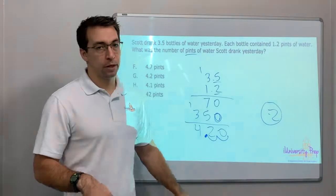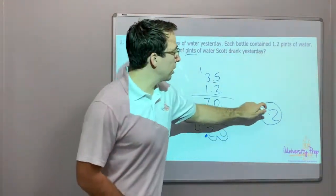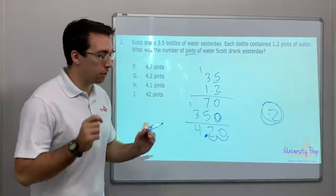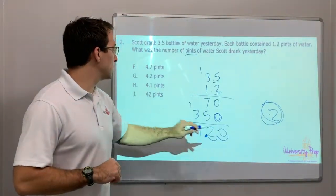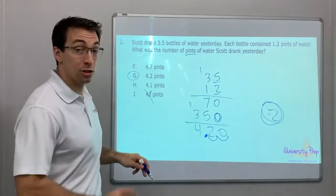We have two decimal places, so one, two: 4.2. It's so important if you count your decimals before you even start, it really helps you with your answer. There's going to be two decimals, there's my two decimals. 4.2 pints. It's not 42 pints, they're trying to trick you.